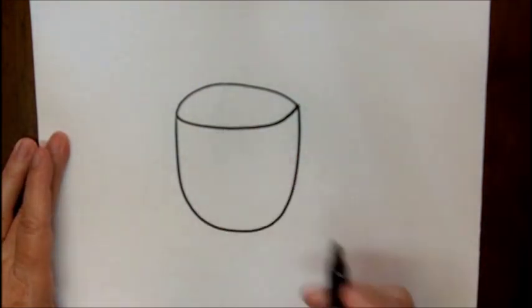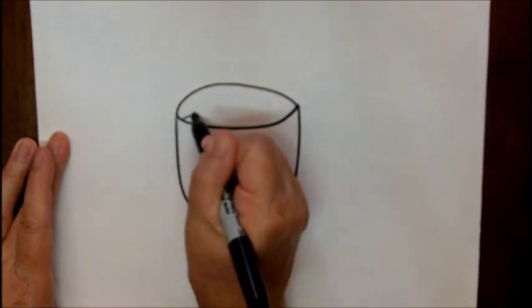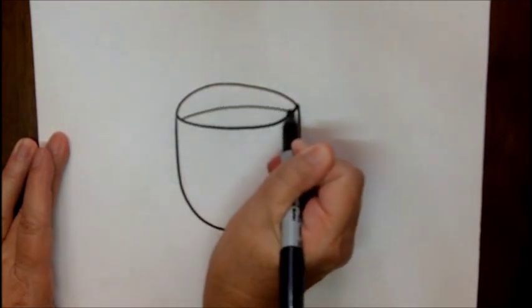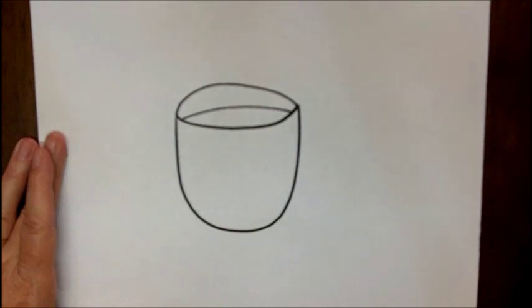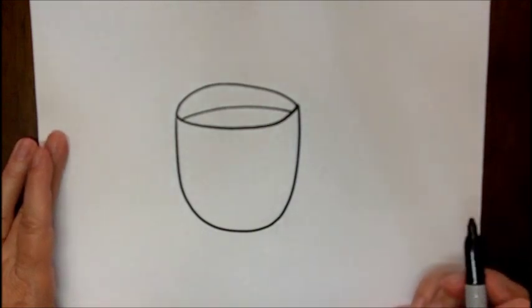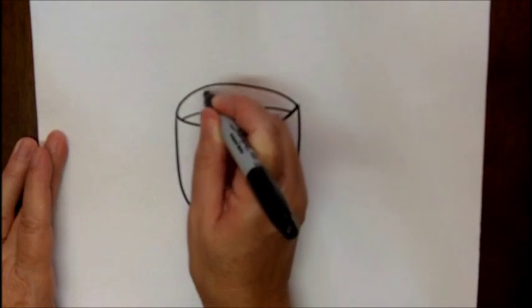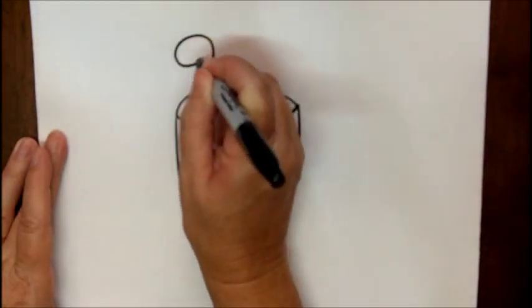Now inside of this oval, we're going to make some coffee, which is just going to be a curved line. And coming out from the coffee, we're going to make some steam. It's just basically some really swirly lines.